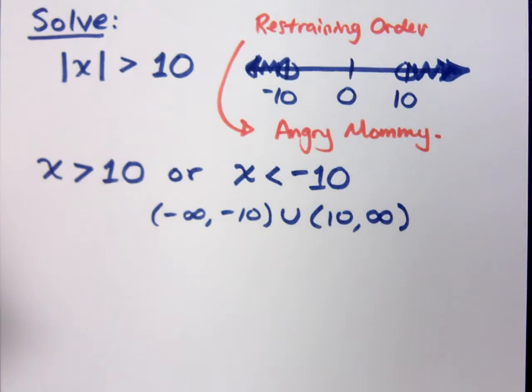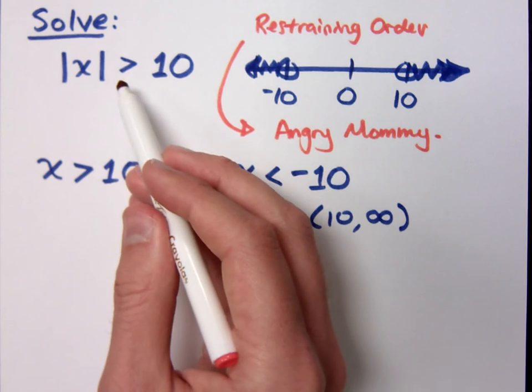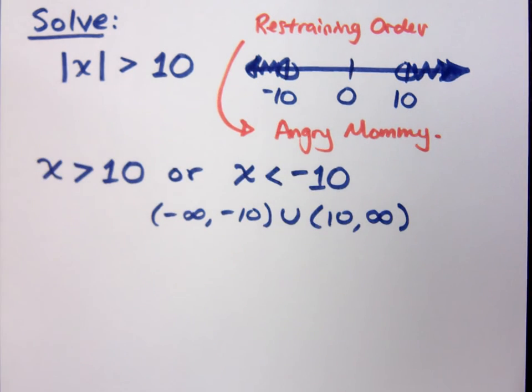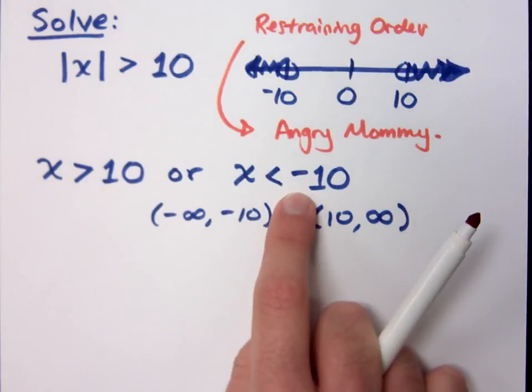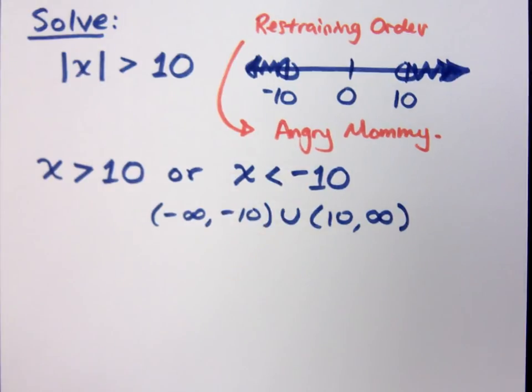But when I change the inequality, and I want to be greater than, that means I want your distance to be further away from me on the outsides. So you have greater than 10 or less than negative 10. Okay.